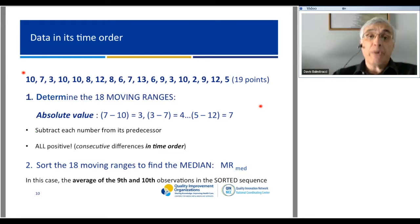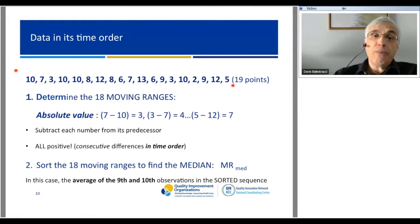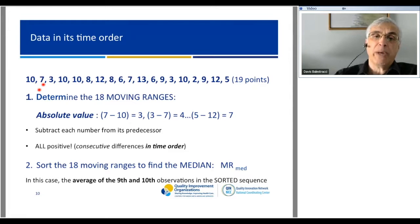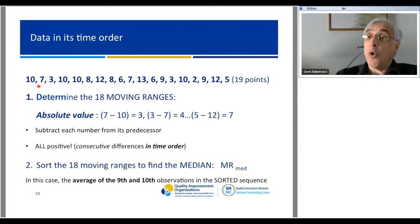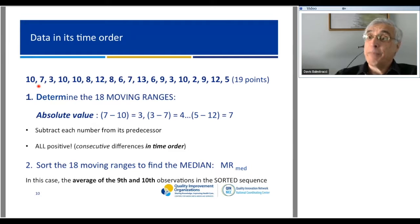The math is very simple. Here are the 19 data points in their time order—and that's important, time order. I determine what are called the moving ranges, which simply means I take each data point and subtract its predecessor. It's the absolute value—it's variation; I don't care whether it's positive or negative. This number also has very nice statistical properties. The one time where ease of calculation and statistics go hand in hand, it is useful.